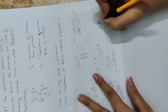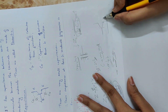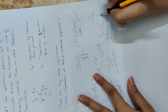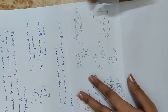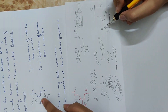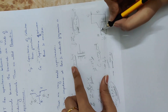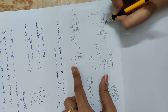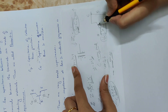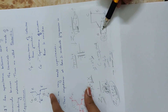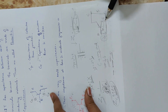Consider a BJT in common emitter configuration: input is applied across base and emitter, output is taken across collector and emitter. With the parasitic capacitance Cπ present across base and emitter, a portion of the input signal is lost — it bypasses to ground through Cπ. This is a disadvantage.